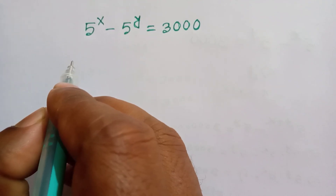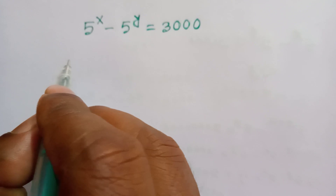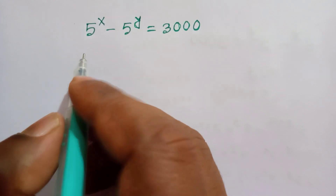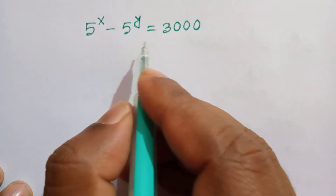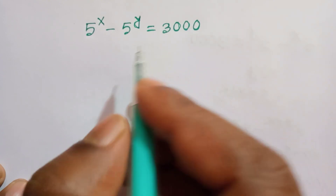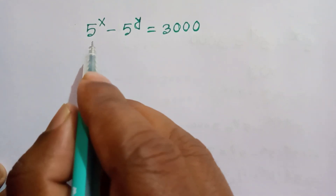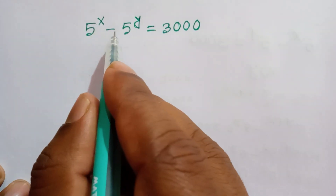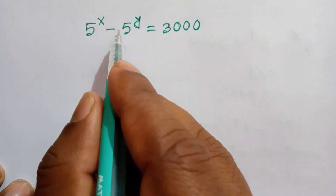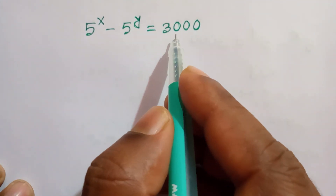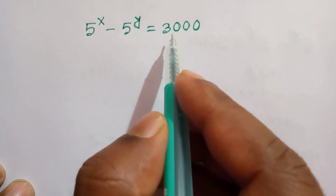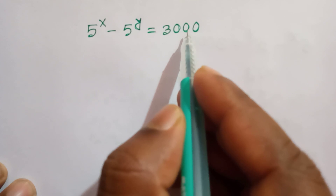Hi everyone, welcome back to my channel Math Points. Today I am going to show how to solve this math problem where 5 to the power x minus 5 to the power y is equal to 3000.